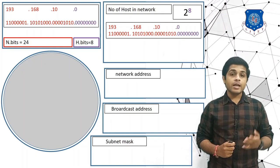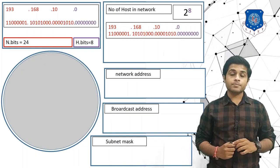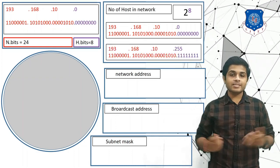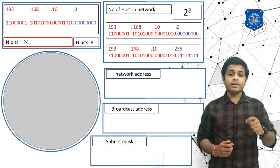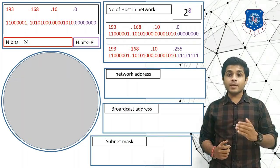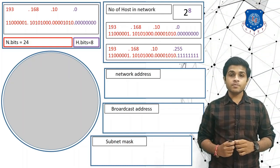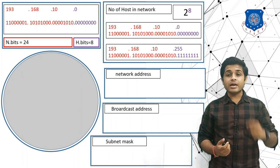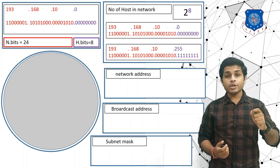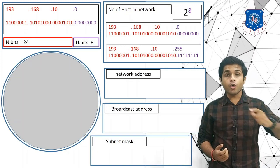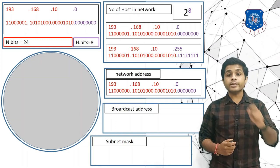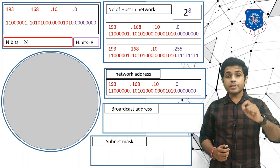To find the last IP address, we set all the host bits to 1, and we get 193.168.10.255. So the range of IP addresses in this network is 193.168.10.0 to 193.168.10.255. Generally, the first and last IP addresses are not allocated to any device, because the first IP address — 193.168.10.0 — represents the whole network.